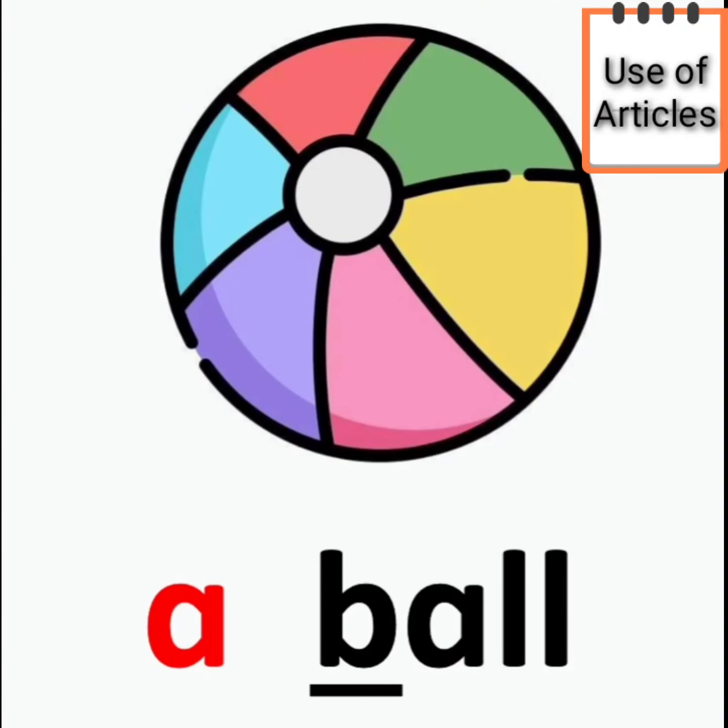A ball. Children, now the word is starting with a consonant B. So, we will use a ball. Because for consonant, we have to use the letter A or article A.